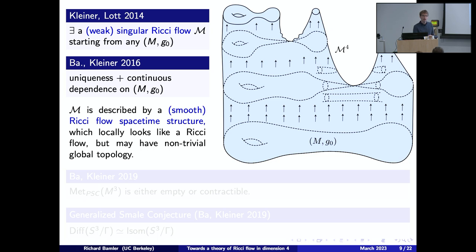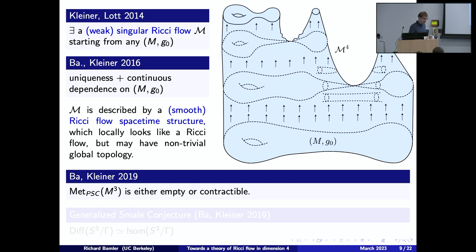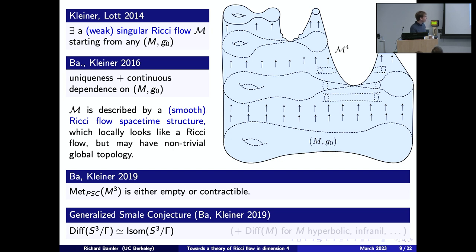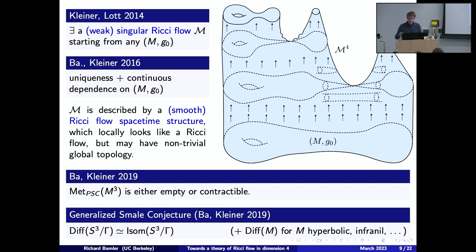This answers Perelman's question and allows us to derive topological consequences, because we can now evolve continuous families of metrics. Using this result, we showed that the space of metrics with positive scalar curvature on any three-manifold is either empty or contractible. We also proved the generalized Smale conjecture, which classifies the homotopy type of the diffeomorphism group of spherical space forms and other geometric three-manifolds.